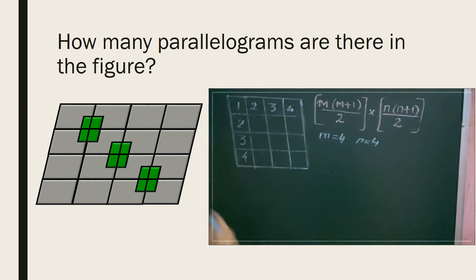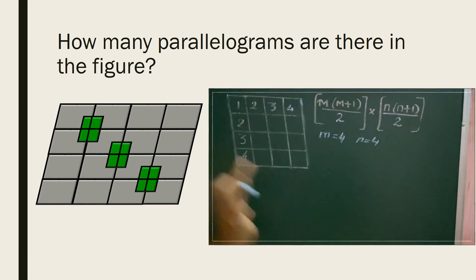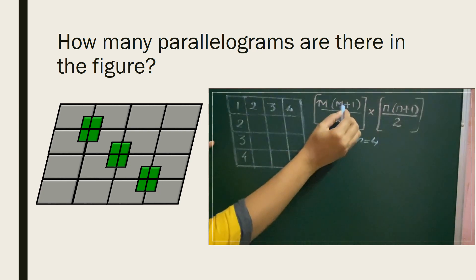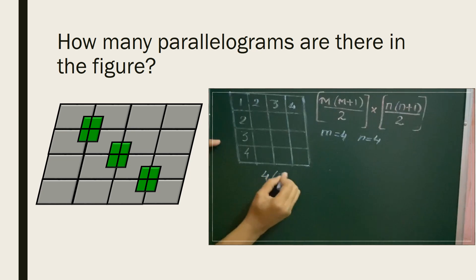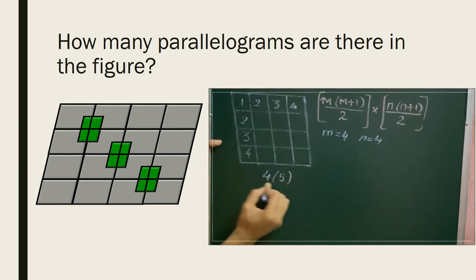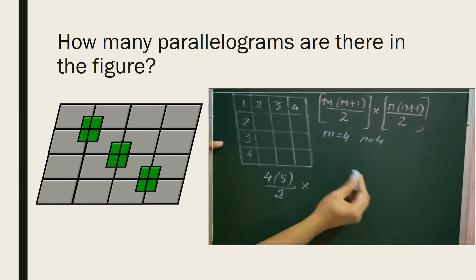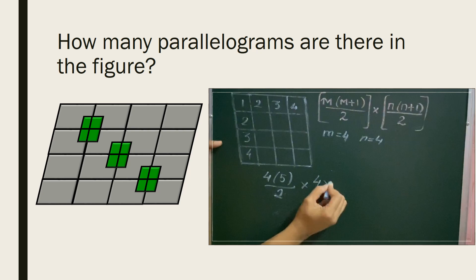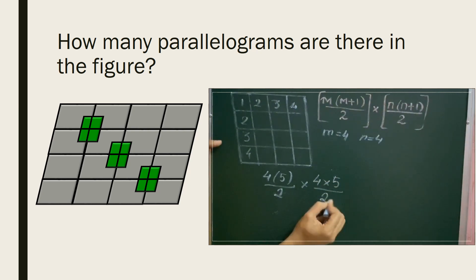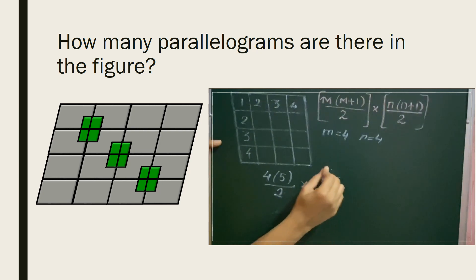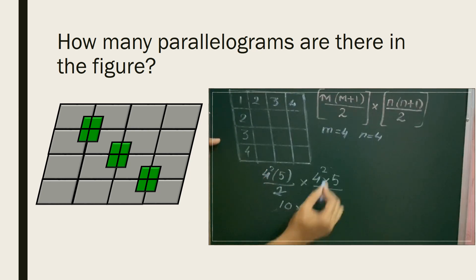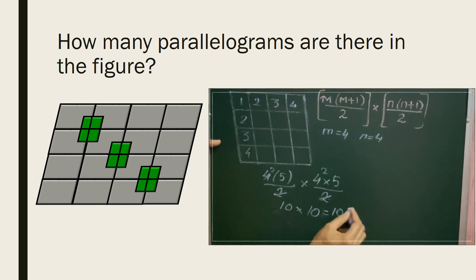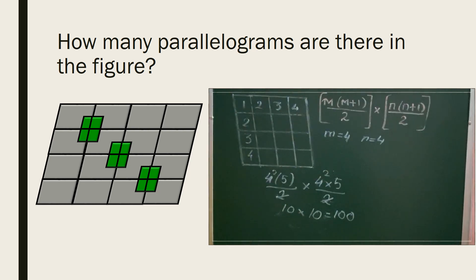The number of parallelograms in this figure — let's calculate by substituting into the formula. It's m=4, m+1=5 divided by 2, then n=4, so 4 into 5 divided by 2. That gives 2 into 5 which is 10, and 10 into 10 — 100 parallelograms in this big figure.